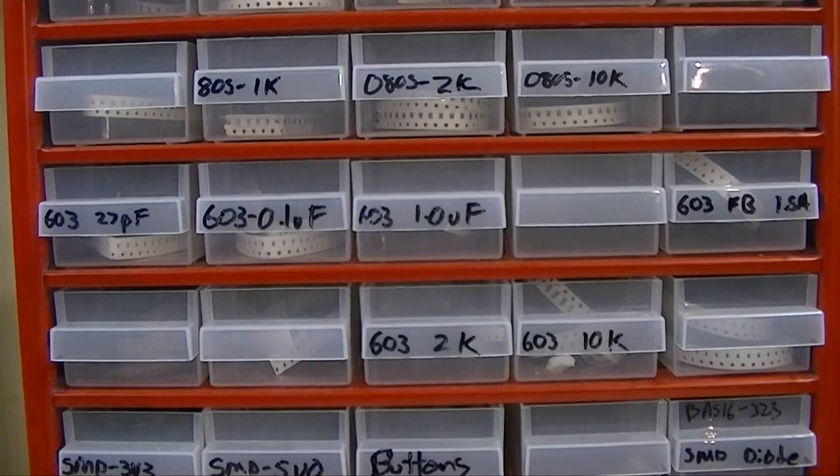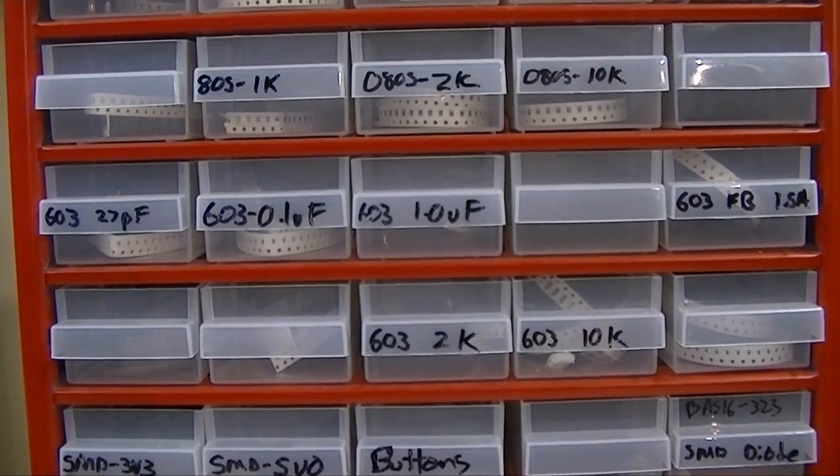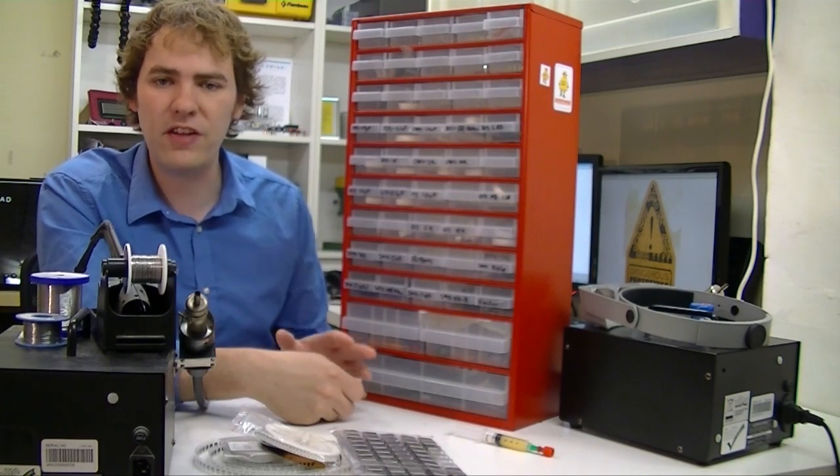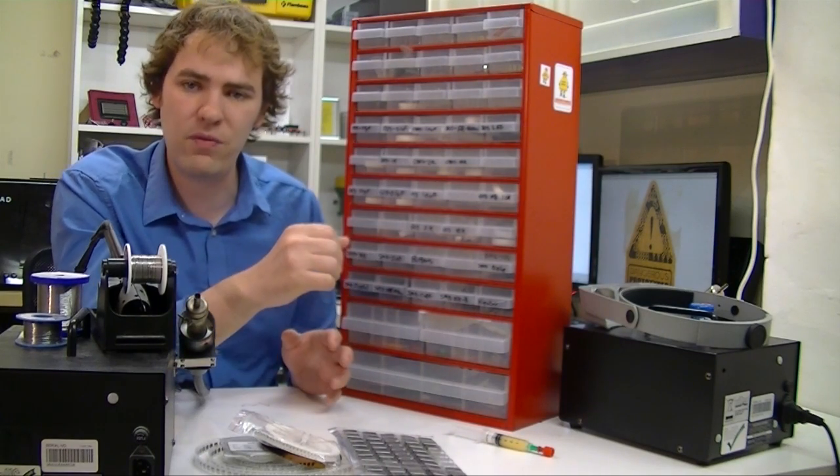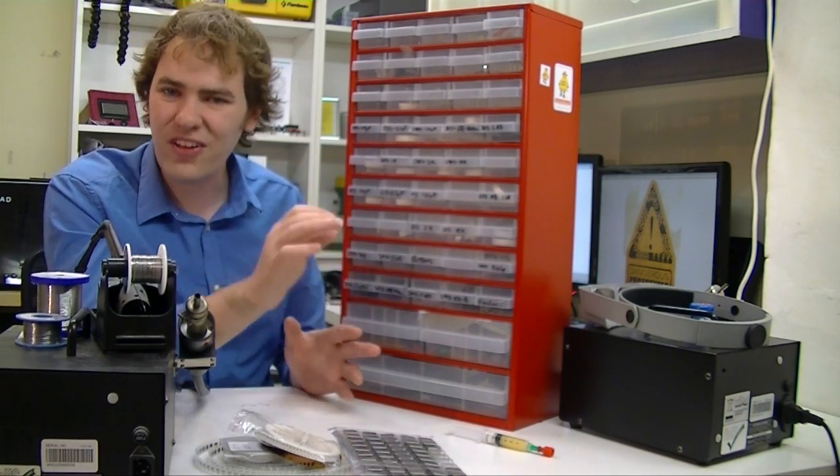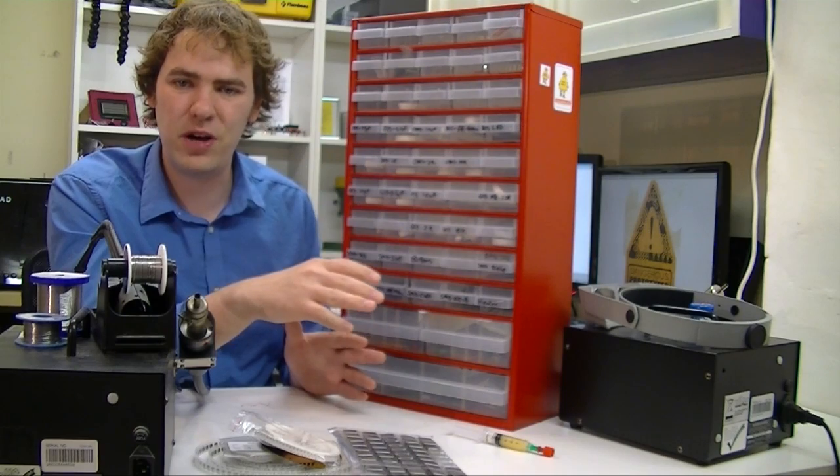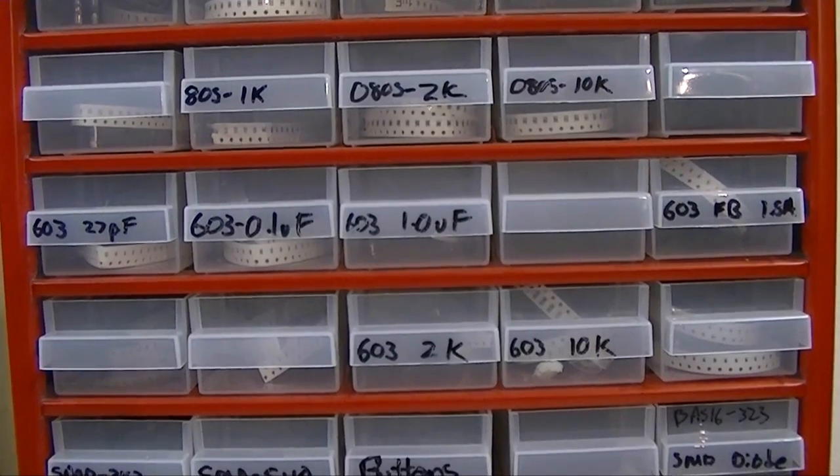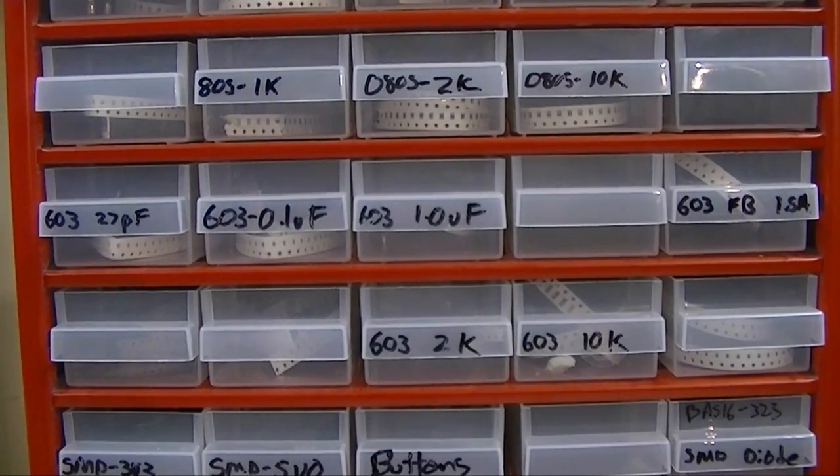The next two rows are 0603. This is the size we're using for most stuff now. The parts are a lot smaller than 0805, so they fit in places that 0805 wouldn't. Not only that, they're a lot cheaper if you go onto Mouser or somewhere. You can get small quantities of 0603, sometimes at half the price of small quantities of 0805.